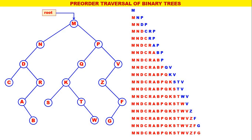Now you can observe all the nodes have become red, meaning all the nodes have been traversed using pre-order. So the pre-order traversal of the given binary tree is M, N, D, C, R, A, B, P, Q, K, S, T, W, V, Z, F, G. I think if you use this method to find the pre-order traversal of any given binary tree — even a big binary tree — you can find it very easily. Simple and straightforward.